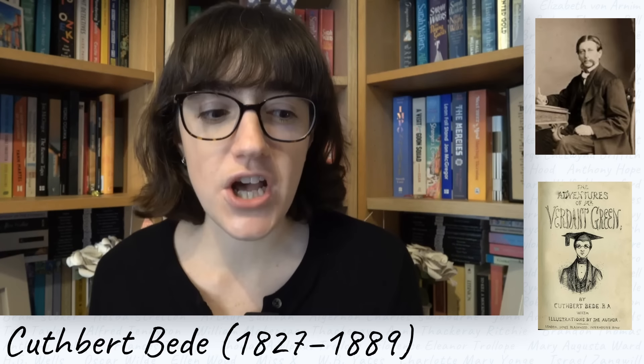Cuthbert Bede was the pseudonym of Edward Bradley, born in 1827 and died in 1889 — an English clergyman and writer from Worcestershire who studied at Durham University, where he got his pen name from St Cuthbert and Bede. He wrote comic newspaper columns and comic novels. The thing he's most famous for, and that I'm most curious to read, is The Adventures of Verdant Green, serialised in the 1850s — a comic novel about an Oxford undergraduate. I enjoy campus fiction and there isn't much of it from the Victorian period.